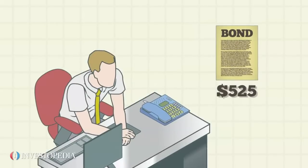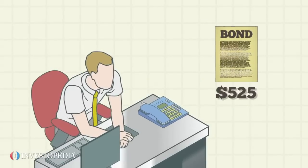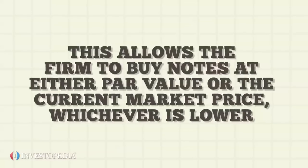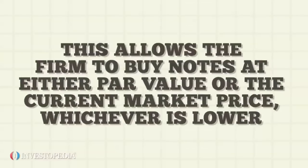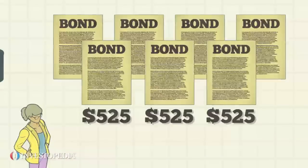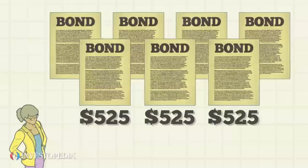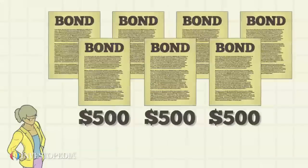In many cases, the firm's sinking fund provision shields against this possibility with what's known as a call feature. This allows the firm to buy notes at either par value or the current market price, whichever is lower. So even if the company's bonds climb to $525, Buds by Bethany is able to purchase a set quantity at $500 a piece.